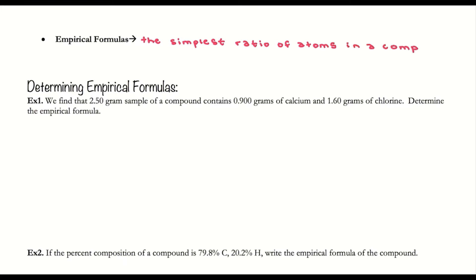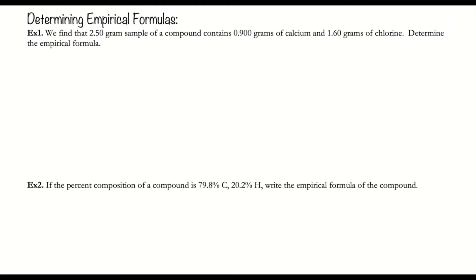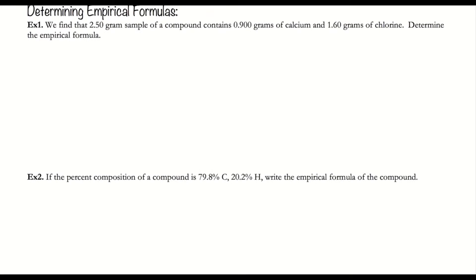In order to be an empirical formula, that ratio has to be made up of whole numbers. We're going to look at two different examples of how we can take analytical data and convert it into an empirical formula.